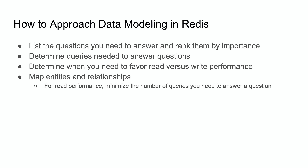You think about what questions do I need to answer, then figure out what queries are needed to answer those questions. When determining what queries you need, think about whether you need to favor reads or writes for a specific query. For read performance you want to minimize the number of queries needed to answer a specific question. One advantage Redis has is it operates in memory, so round trips to the database and general queries are a lot faster.